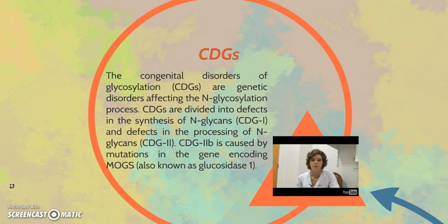The congenital disorders of glycosylation, CDGs, are genetic disorders affecting the N-glycosylation process. CDGs are divided into effects in the synthesis of N-glycans (CDG1) and effects in the processing of N-glycans (CDG2).